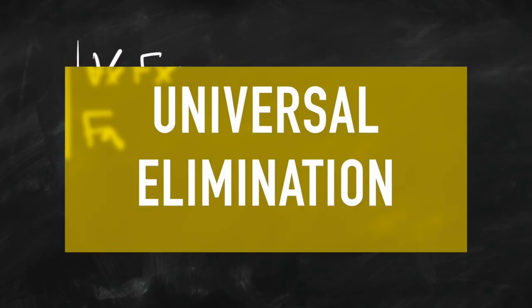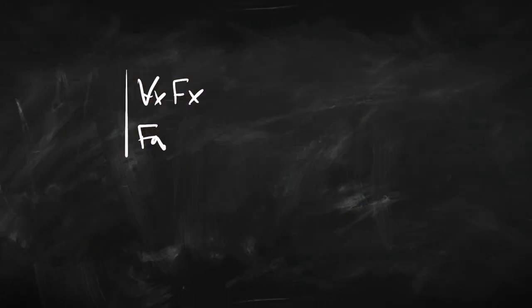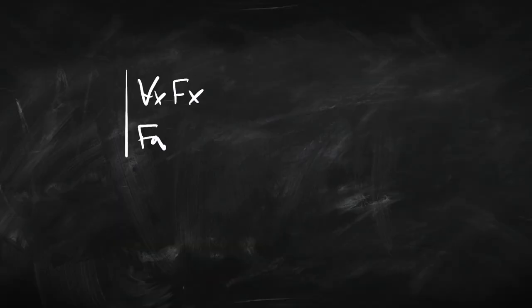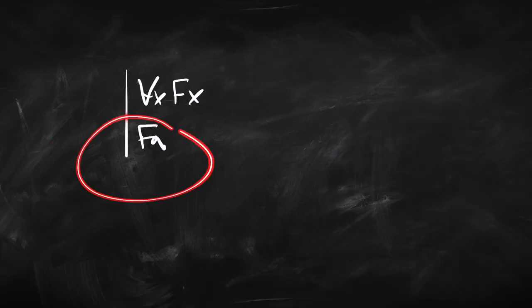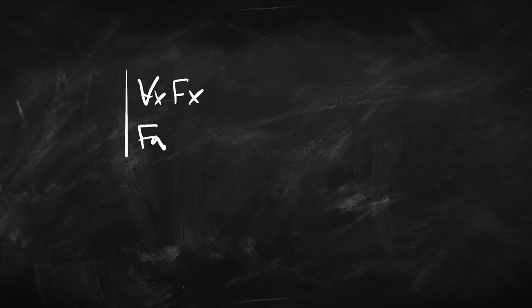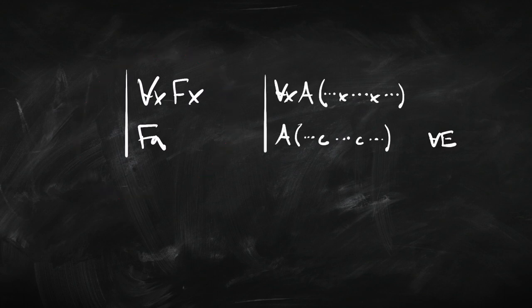So let's start with the simple rules. Perhaps the simplest rule is universal elimination. Here's a really simple and obviously valid inference: if everyone's happy, then I'm happy. From all x, Fx, we can conclude Fa. And that goes for any name — so from everyone's happy, we can conclude I'm happy, and we can conclude you're happy, and so on.